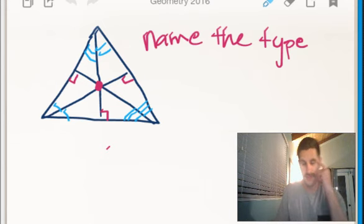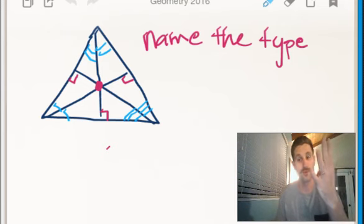Okay, name the type of triangle that we have here. So we have four types. We have circumcenter, we have in-center, we have centroid, and then we have orthocenter.